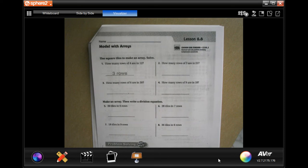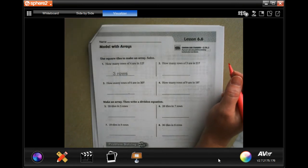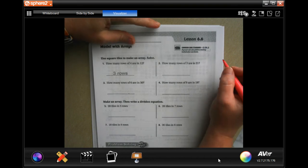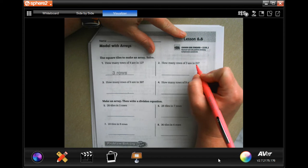Hey y'all, welcome to third grade chapter six lesson six. We're gonna go ahead and get started. So it wants you to use square tiles to make an array. I'm not gonna take the time to make squares but I will make X's for you instead. So how many rows of three are in 21? So I'm gonna do rows of three until I make it to 21.